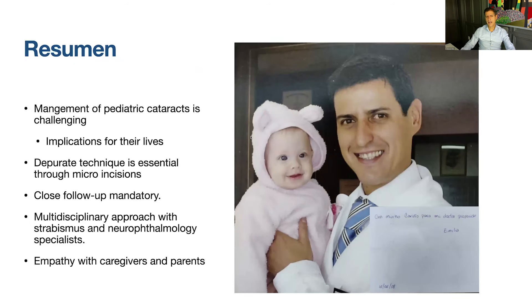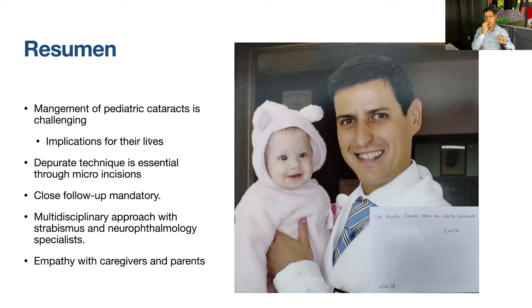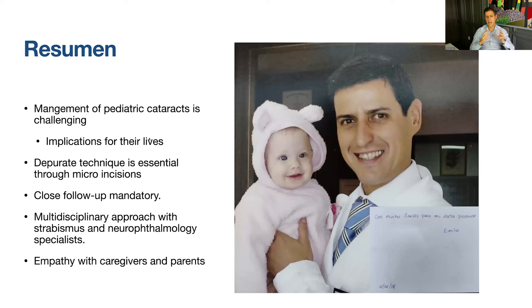In summary, management of pediatric cataracts is challenging. The biggest challenge is the age of patients — they have a long life ahead of them and we want to perform the best procedure possible. A very sleek technique is essential: work through micro-incisions of 1.2 mm using micro-incision forceps and instruments. Open the main incision only to implant a lens. Close follow-up is mandatory — see these patients daily or every other day — and a multidisciplinary approach with strabismus specialists, neuro-ophthalmology specialists, and pediatric ophthalmologists will help, as they are much better prepared to handle occlusion and pleioptic exercises.